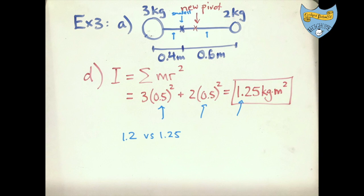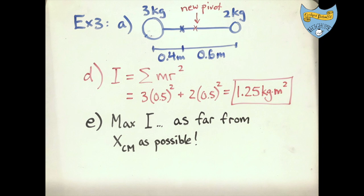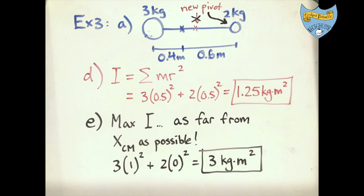There is always the smallest resistance to rotation for a pivot through the center of mass. Part e asks where to put the pivot to get the maximum moment of inertia. The answer is as far from the center of mass as possible — the extreme right end, through the 2 kg mass. That calculation gives 3 kg·m², which is the largest possible moment of inertia for this system. That covers the fundamentals of moment of inertia for point masses. The next concept is torque, and we'll discuss how it applies to moment of inertia in another video.